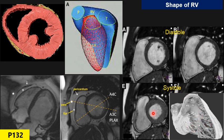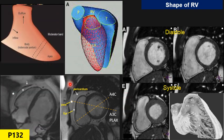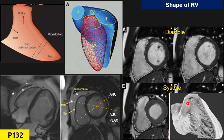The right ventricle has four components: first, the inflow tract, right under the tricuspid valve; second, the body, sometimes called the mid portion; third, the apex, which is completely packed with trabeculation — severe trabeculation is one of the key anatomic features of the right ventricle; and fourth, the outflow tract, which is the only part of the right ventricle that does not have trabeculation.